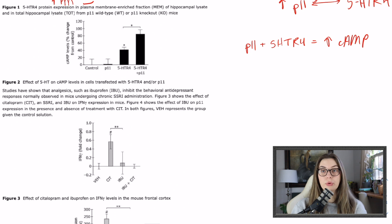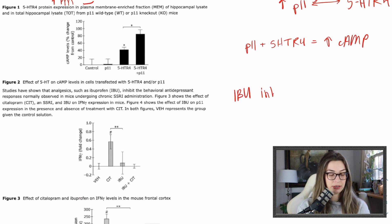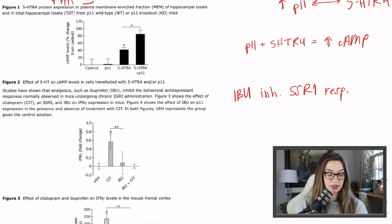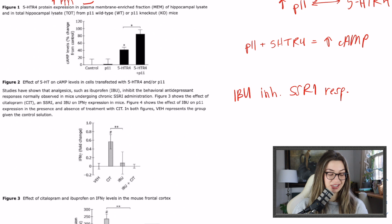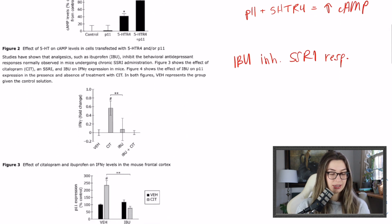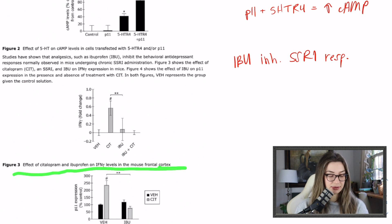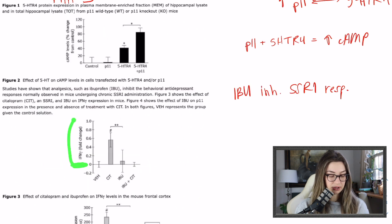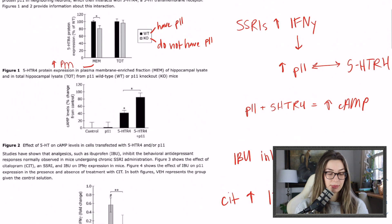Studies have shown that analgesics such as ibuprofen inhibit the behavioral antidepressant response normally observed in mice undergoing chronic SSRI administration — so ibuprofen inhibits the SSRI response. Figure 3 shows the effect of citalopram (an SSRI) and ibuprofen on interferon gamma expression in mice, going back to how interferon gamma mediates this pathway. Figure 4 shows the effect of ibuprofen on p11 expression in the presence and absence of citalopram treatment.